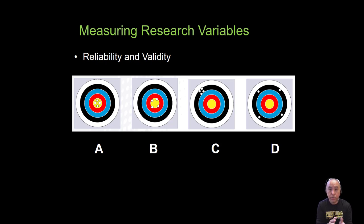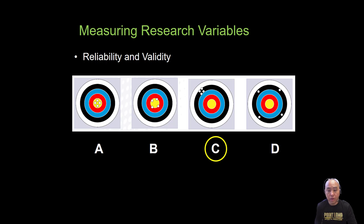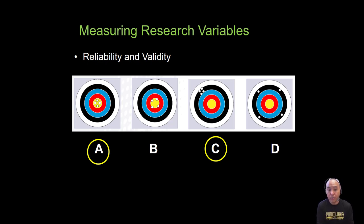I have here four scenarios of a bullseye — an archer trying to hit the center of the bullseye — and A, B, C, and D represent four different sets of results. Between all four scenarios, the most consistent set of results would be C, as this person was able to hit the same spot consistently in all four trials. However, A is the most reliable and valid measure, since this person consistently hit the center of the bullseye, which we consider the gold standard.